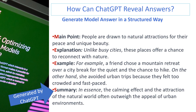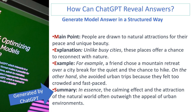For our example, the model answer generated with high-scoring IELTS features was: Main point — people are drawn to natural attractions for their peace and unique beauty. Explanation — unlike busy cities, these places offer a chance to reconnect with nature. Example — for example, a friend chose a mountain retreat over a city break for the quiet and the chance to hike; on the other hand, she avoided urban trips because they felt too crowded and fast-paced. Summary — in essence, the calming effect and the attraction of the natural world often outweigh the appeal of urban environments.